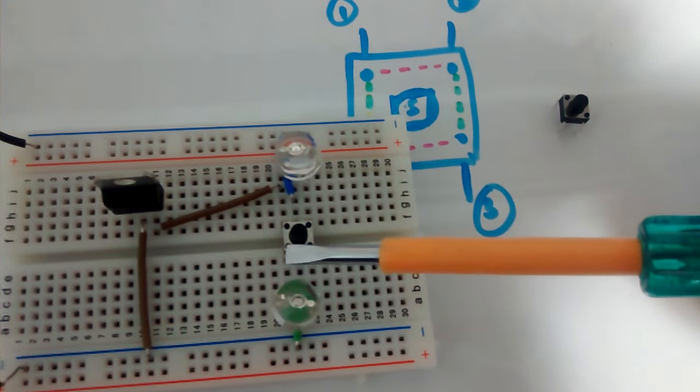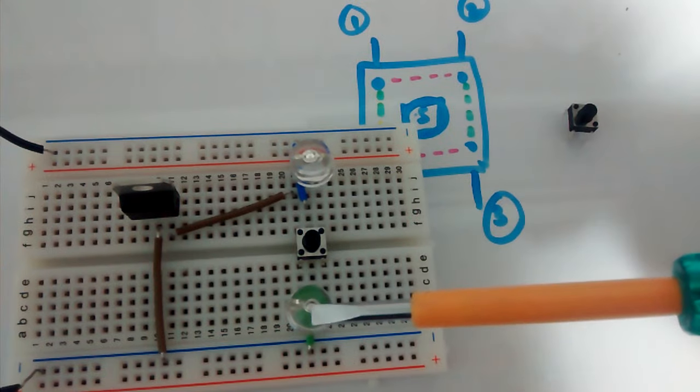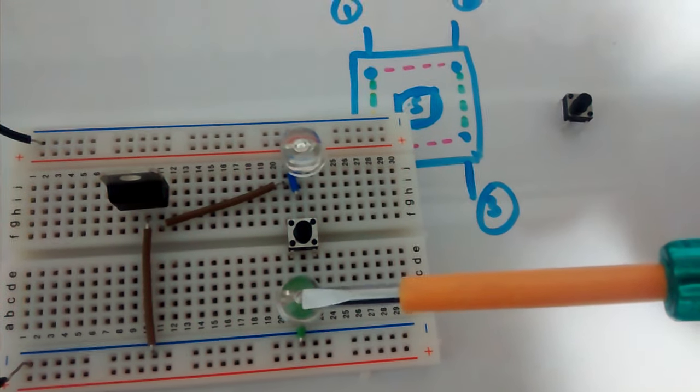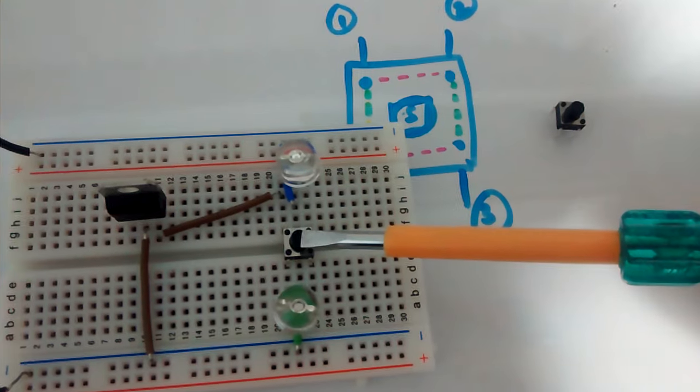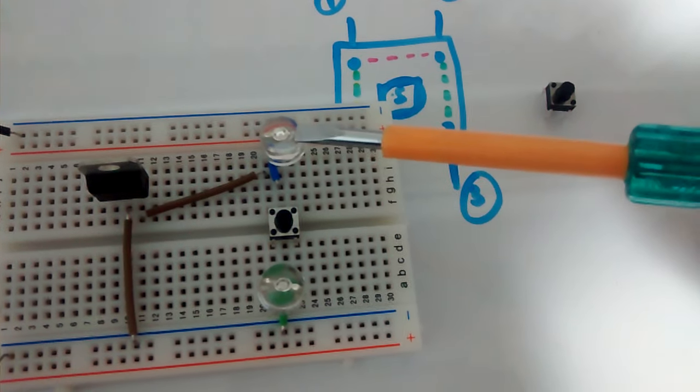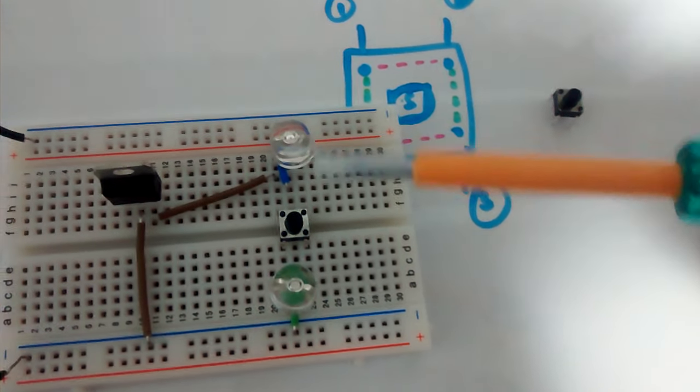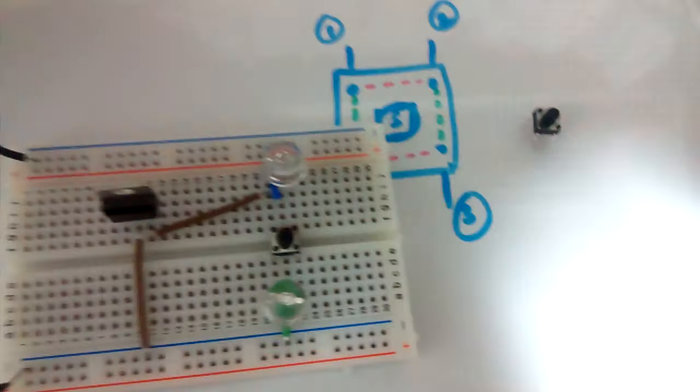Pin number one and pin number four are always connected, so this LED will always be glowing from the moment I power it up. And when I press the switch, the blue LED will be glowing. So let's see the working. Let me just power it up.